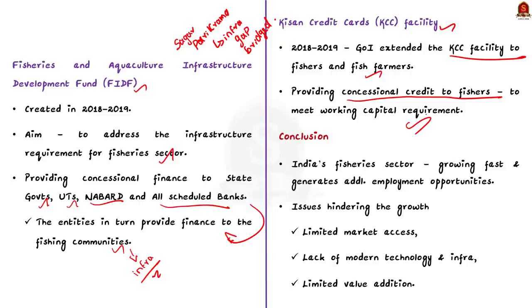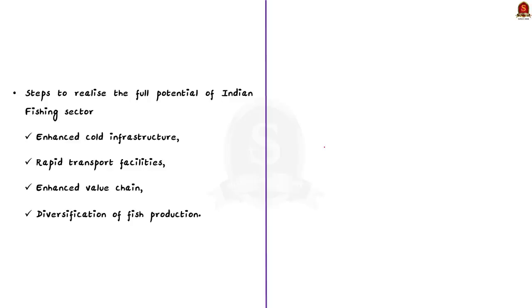For the conclusion, you can suggest measures like enhanced cold storage infrastructure, rapid transport facilities, enhanced value chain and diversification of fish production to help the fishing sector realize its full potential. By discussing this question, we covered three aspects of the Indian fishing sector: the challenges faced, the opportunities available, and the steps taken by the government to address those challenges.